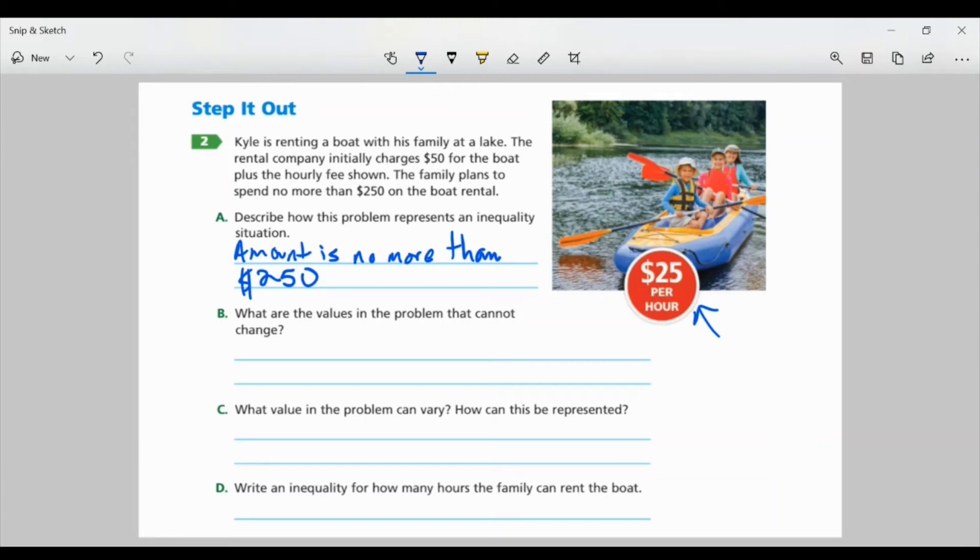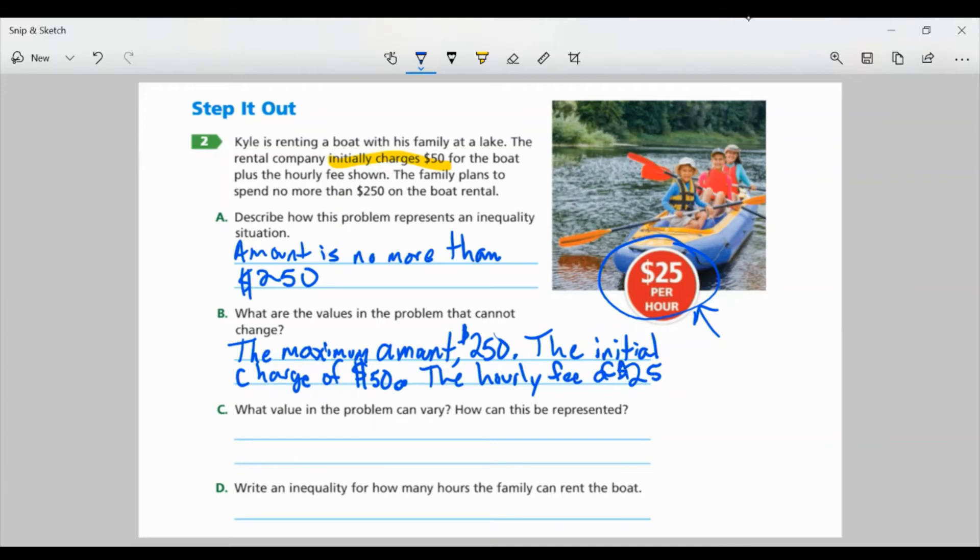Part B. What are the values in the problem that cannot change? Well, I know the maximum amount can't change, which was $250. The initial charge of $50. That's another value that won't change. And the final value is the cost per hour, or the hourly fee of $25. That's another value that will not change.